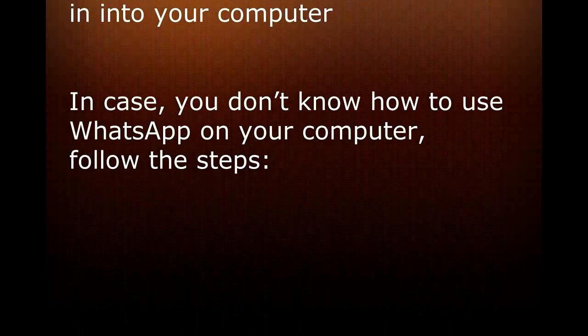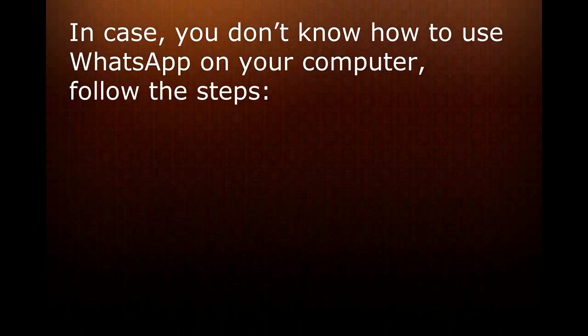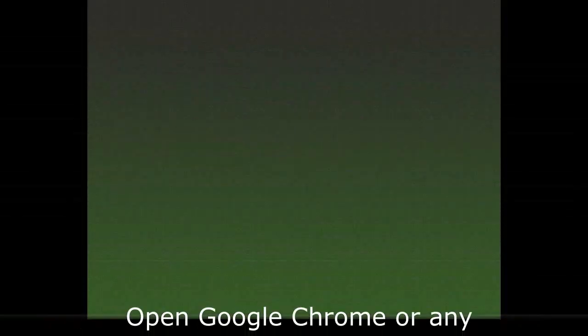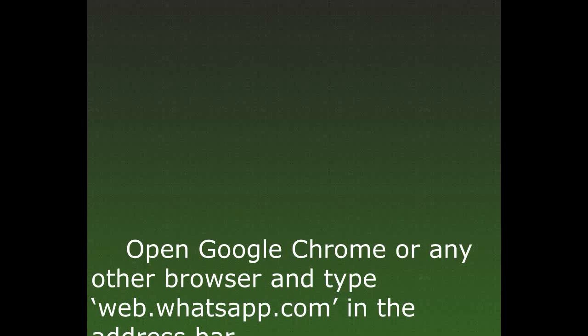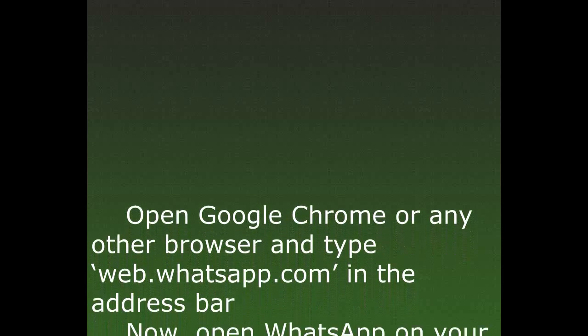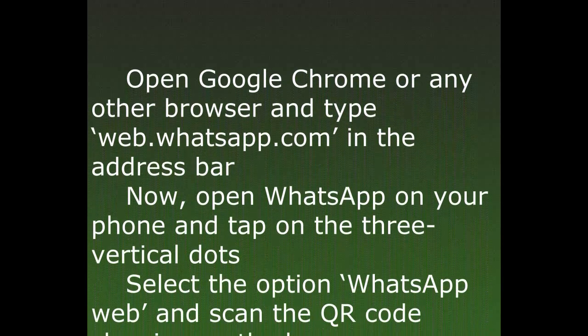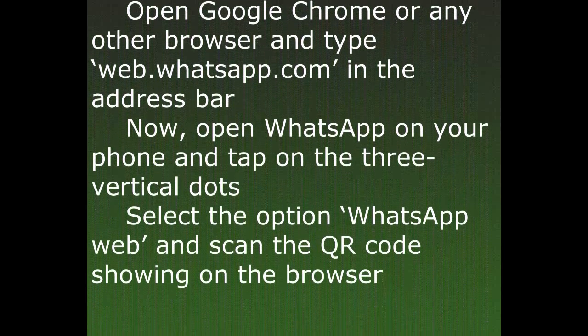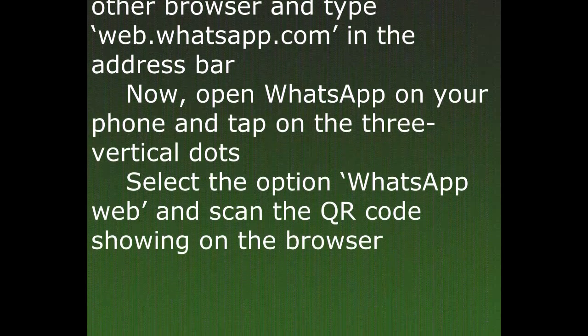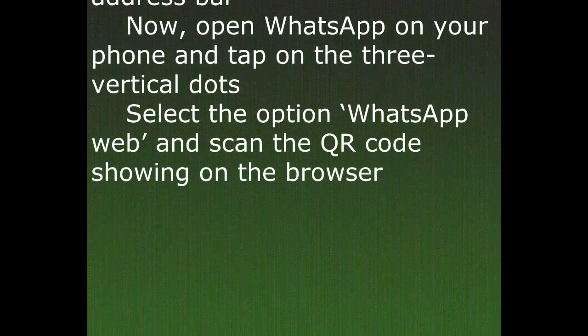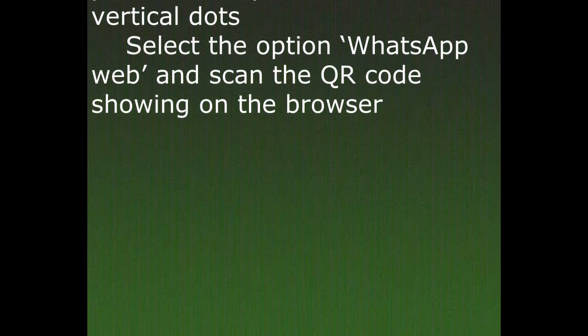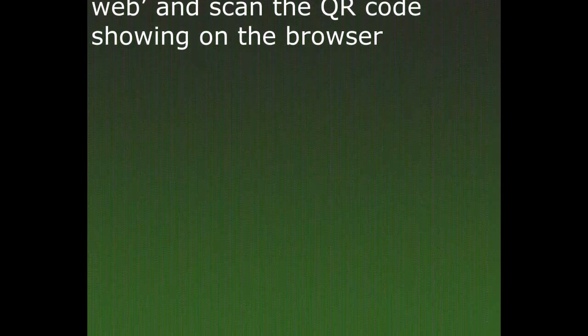WhatsApp Web must be logged in on your computer. In case you don't know how to use WhatsApp on your computer, follow these steps: Open Google Chrome or any other browser and type web.whatsapp.com in the address bar. Now open WhatsApp on your phone, tap on the three vertical dots, select the option WhatsApp Web, and scan the QR code showing on the browser.